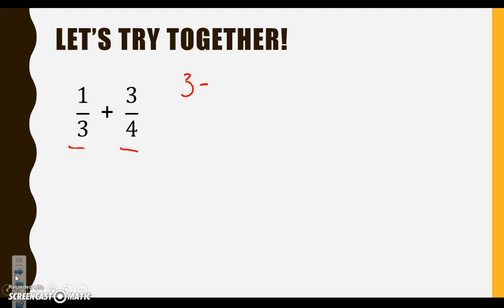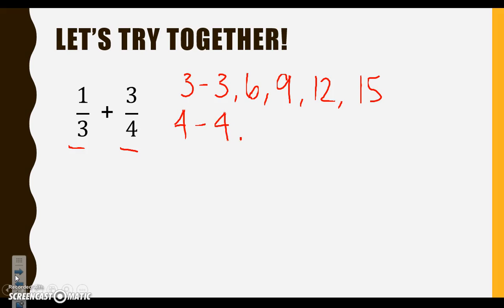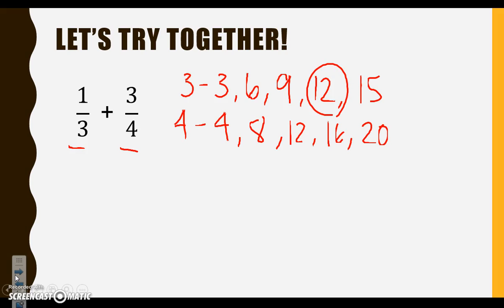We're going to start with 3. We know we have 3, 6, 9, 12, 15. Let's list our multiples for 4. We have 4, 8, 12, 16, 20. I like to list at least 5 multiples for each number to see if I've come across a multiple that they have in common. As I'm going through, I notice that they both have 12.